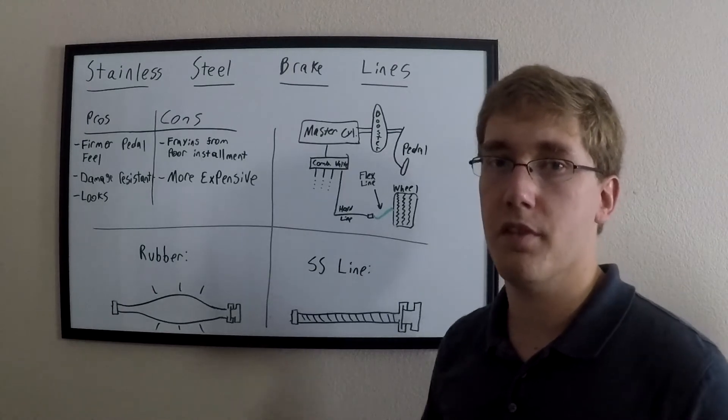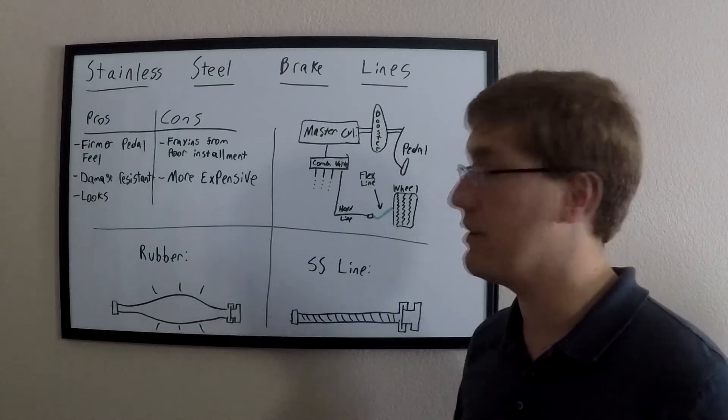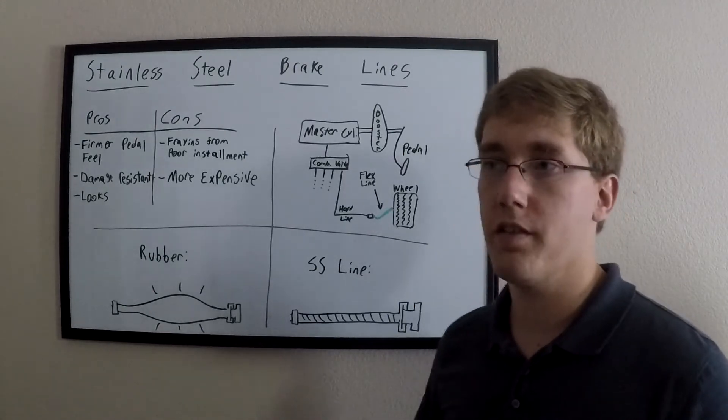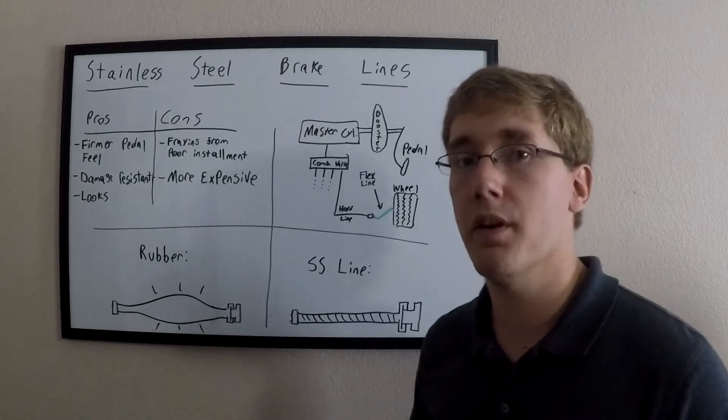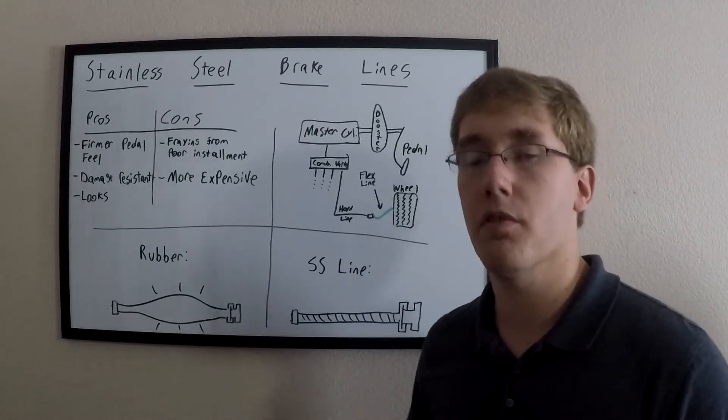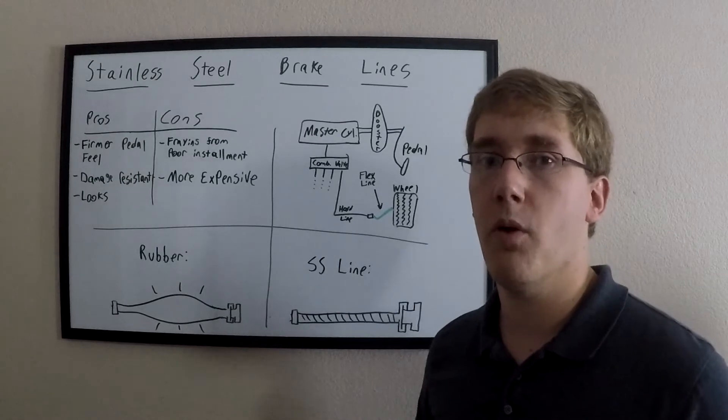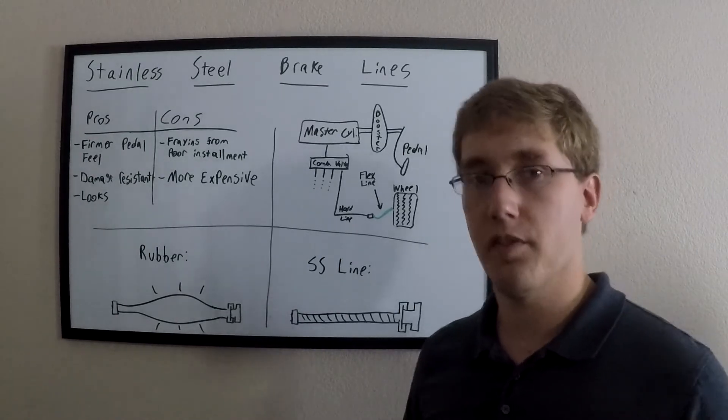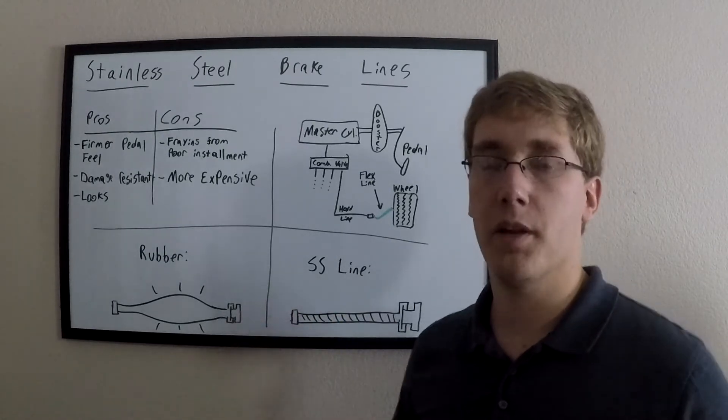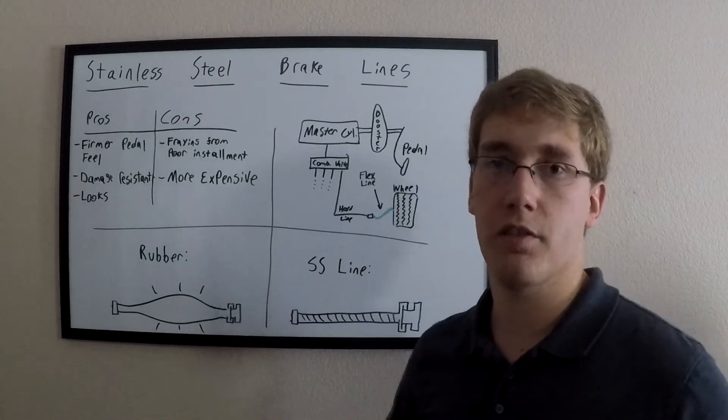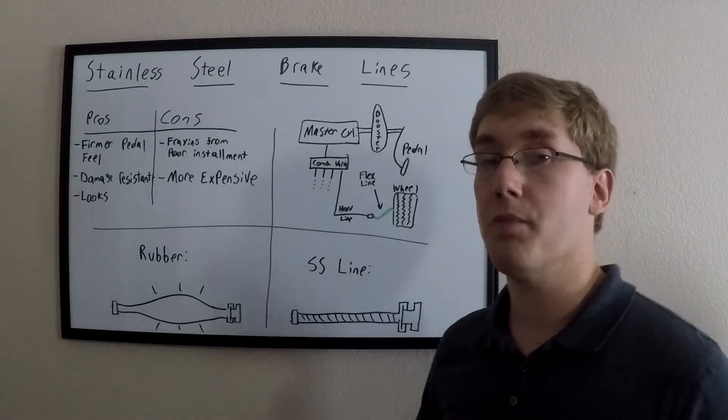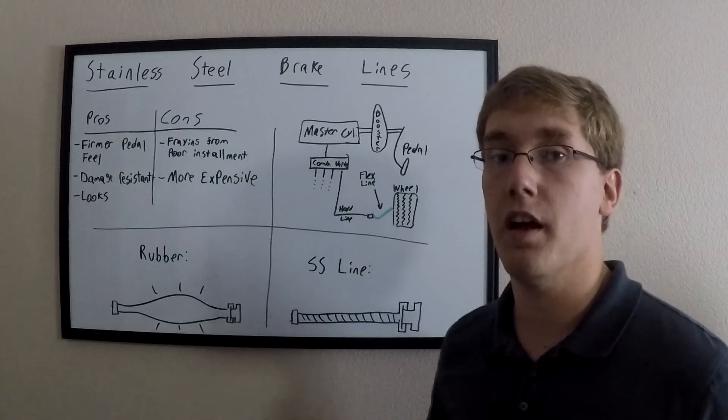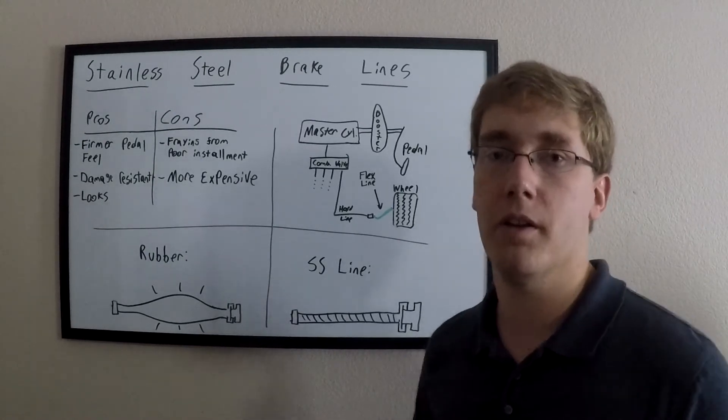The real performance advantage from stainless steel lines is going to be if you take it to the track, where the increased heat inside the brake fluid can cause the rubber hose to become more flexible and possibly expand more, which causes a bit of brake fade as you get a little bit of squishiness inside the pedal. Or if your rubber brake lines are becoming old or maybe drying out and starting to deteriorate, it might be an option to replace them with stainless steel lines because they will firm up that pedal a little bit.